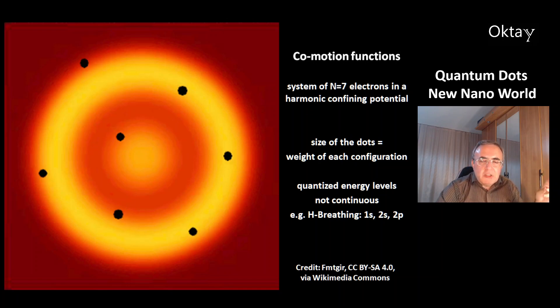And a point about quantum mechanics is that you have quantized energy levels, not continuous. In my last video about Heisenberg physics, we had an example of hydrogen breathing. The electron of the hydrogen atom can be in the 1s orbital with its energy, the 2s orbital or the 2p orbital, but it cannot be in between.